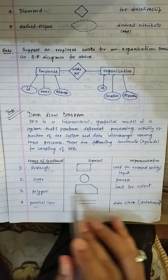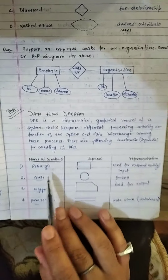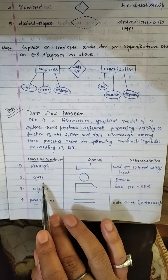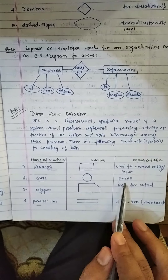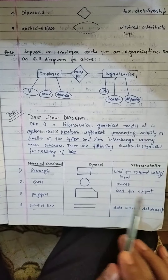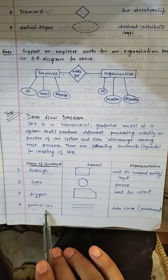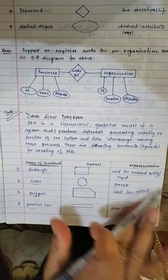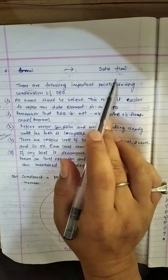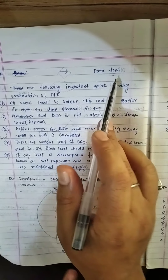There are symbols used in DFD: a rectangle for external entity, a circle for process, a polygon or column used for output, parallel lines for data store, and an arrow symbol for data flow.